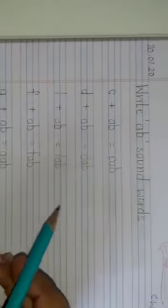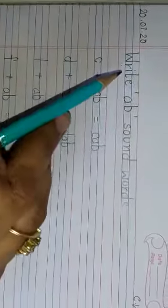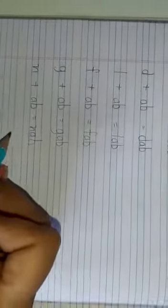In the same way, you are going to do it in your copies. You will write down today's date, then classwork, and then the heading: write AB sound words. Then in the same way, you are going to write down these six words which have the AB sound in them, in the same way I have just taught you.